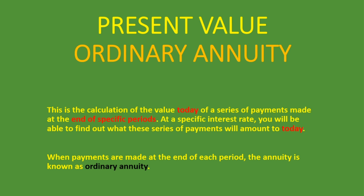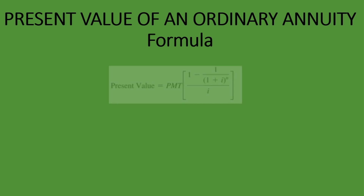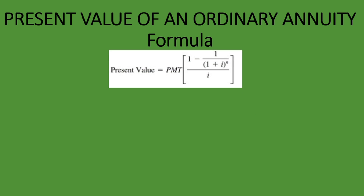What is the formula for the present value of an ordinary annuity? Present value equals PMT times 1 minus the sum of 1 divided by 1 plus i, to the power of n, and you divide all of that by i.